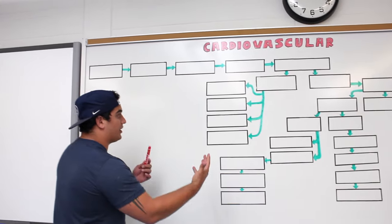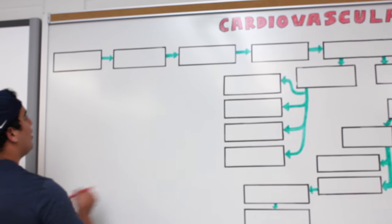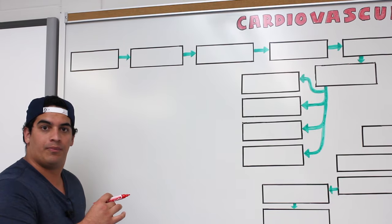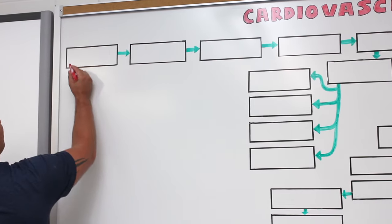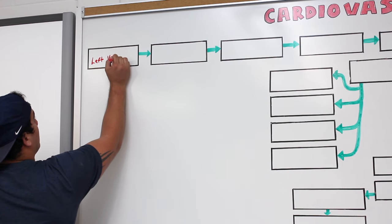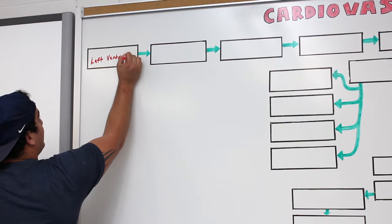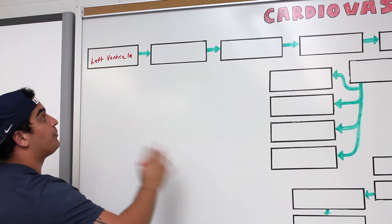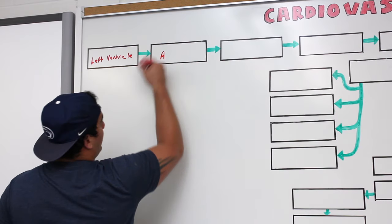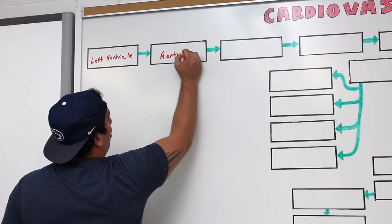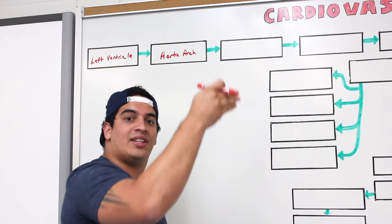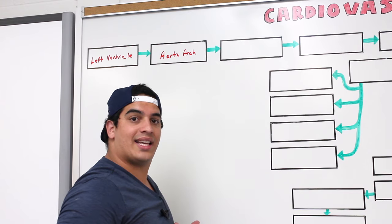We're talking about systemic circulation — we have a series of these videos. The systemic circulation is driven by the left ventricle; that's the pump. The left ventricle starts this circuit, pumping blood out into the aorta. It goes up through the ascending aorta and then into the aortic arch.